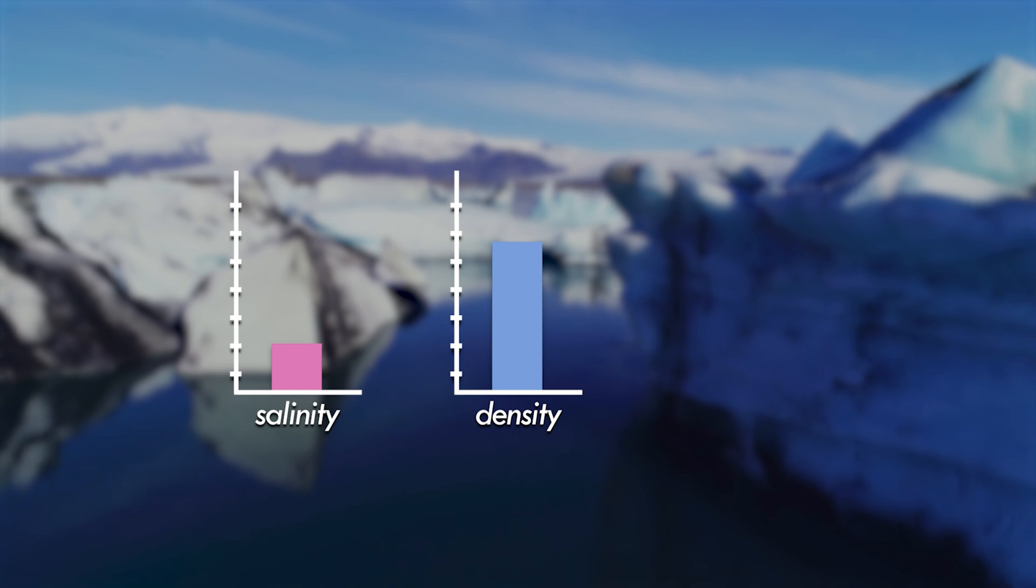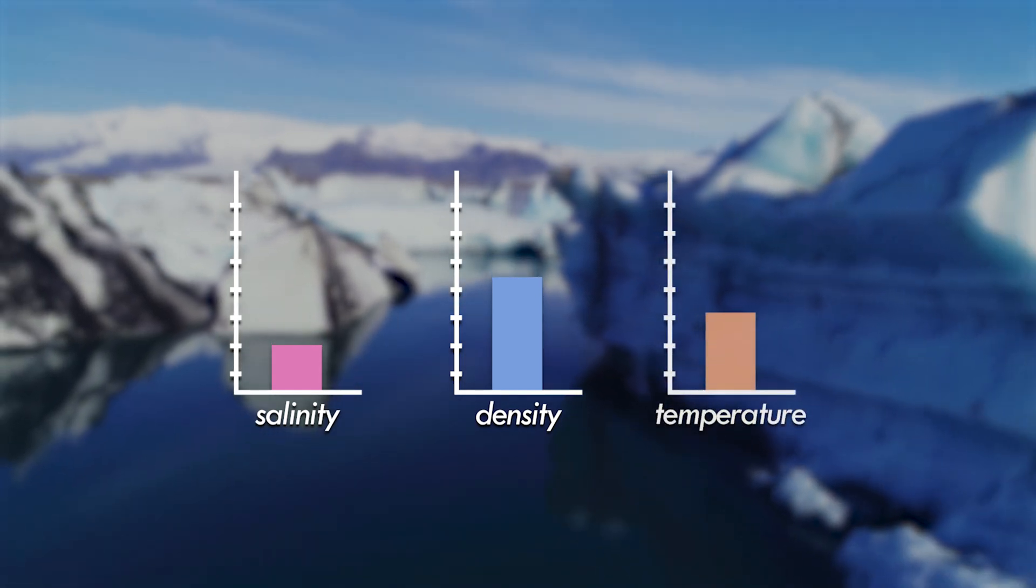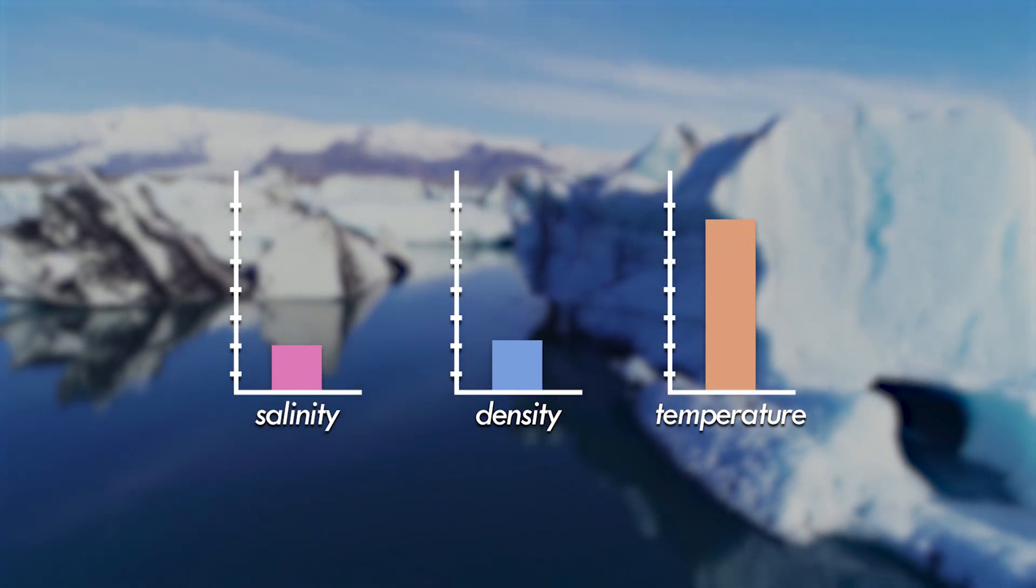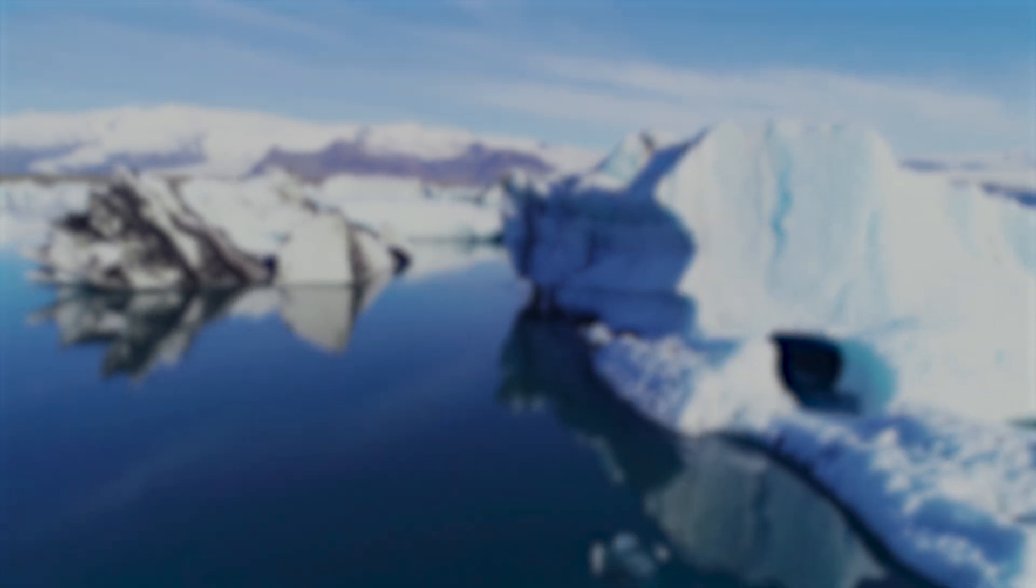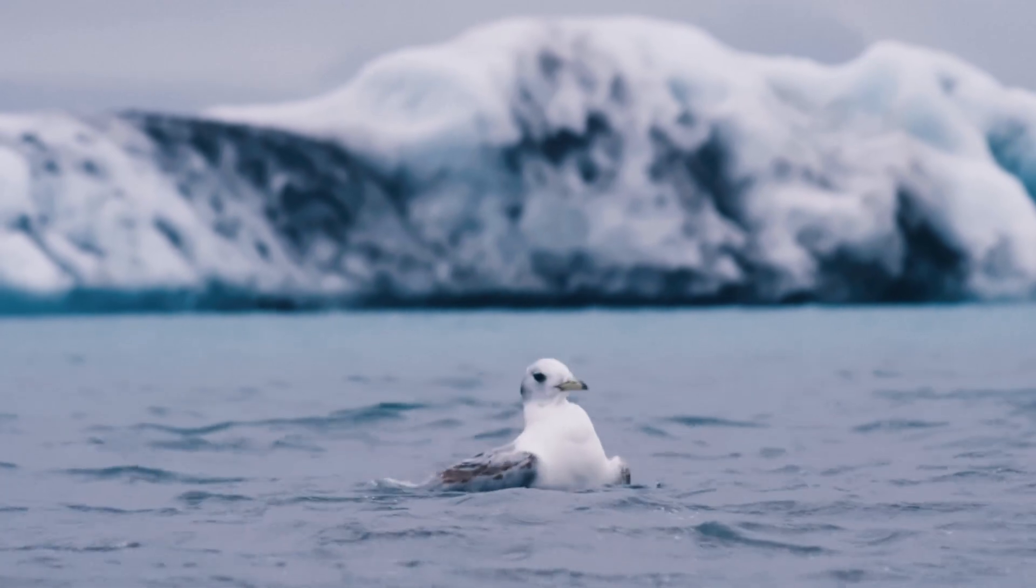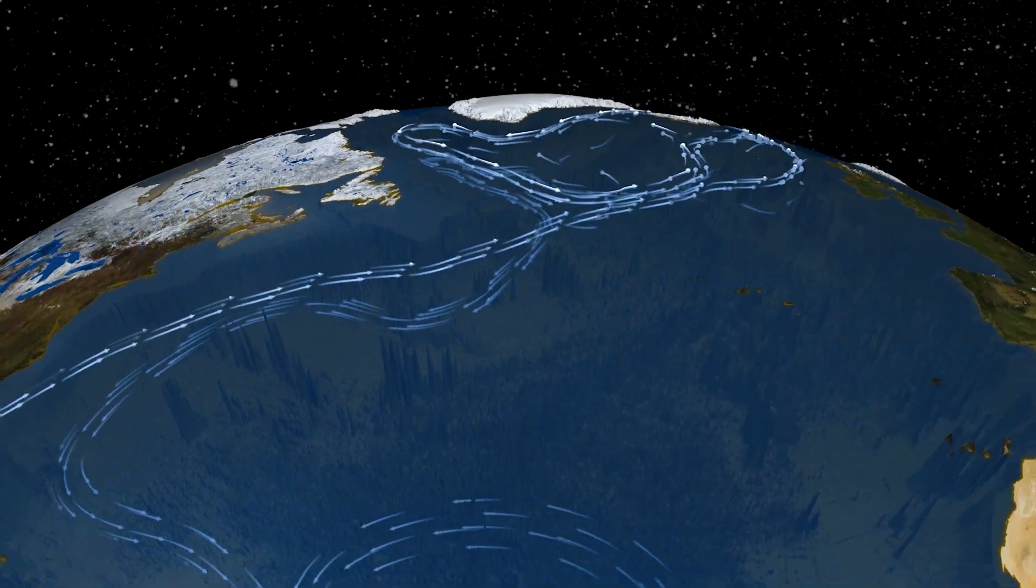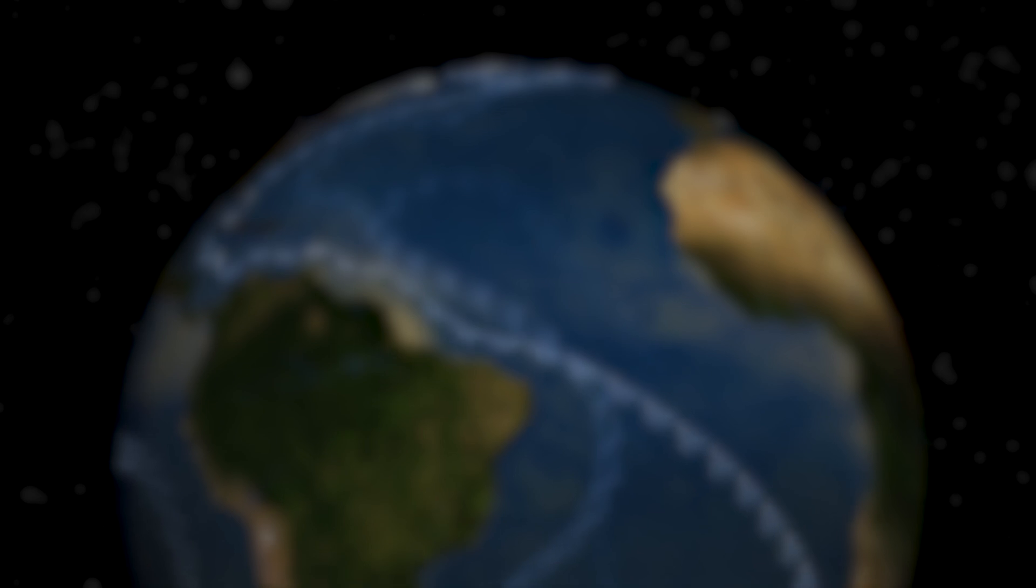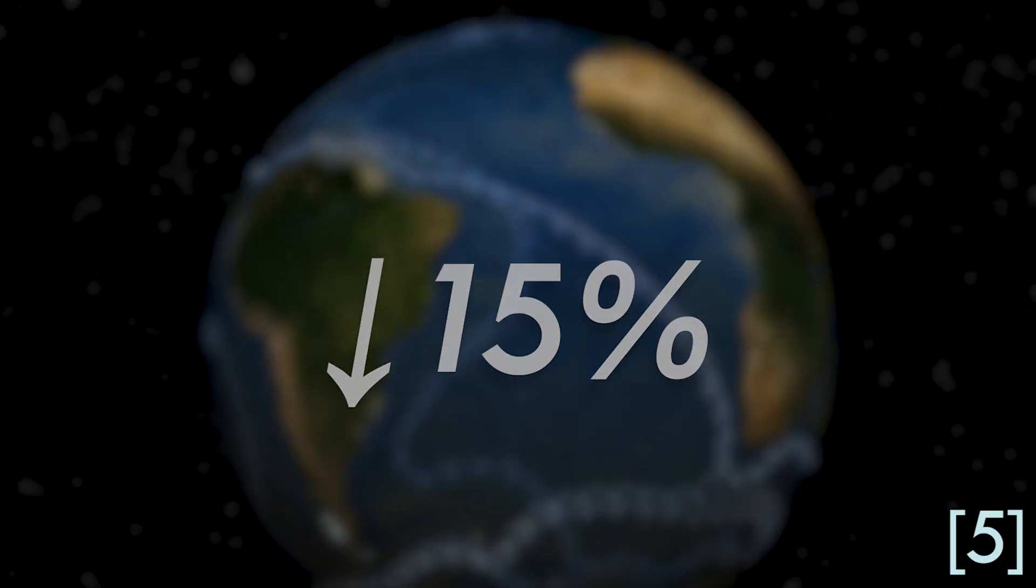Furthermore, as this region heats up, the water flowing north is not cooling as much as it used to. This makes the water even less dense, slowing the amount that sinks into the deep ocean. With less water sinking, the conveyor belt of the AMOC starts to slow down, which has already weakened it by around 15% since 1950.